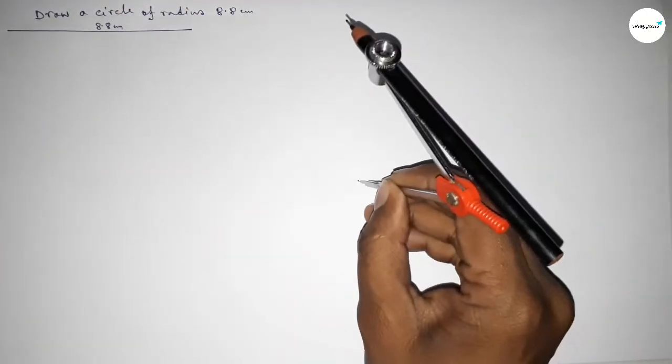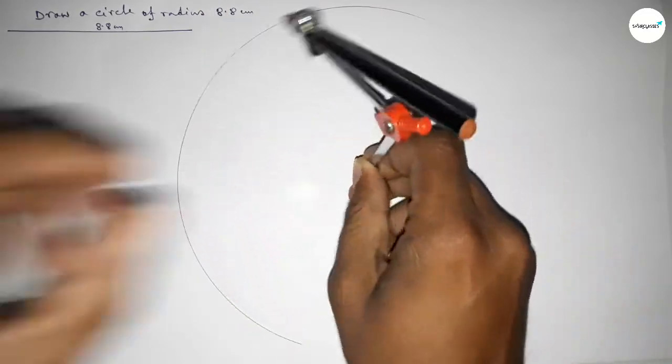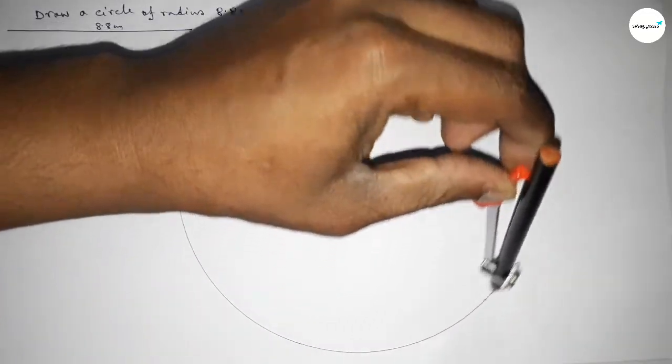And next, put the compass on the point here. Now drawing here an arc by this way.